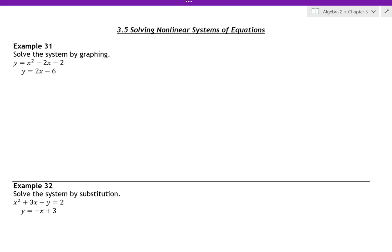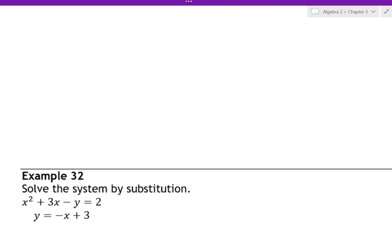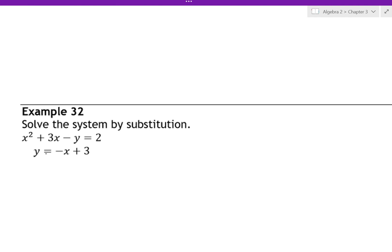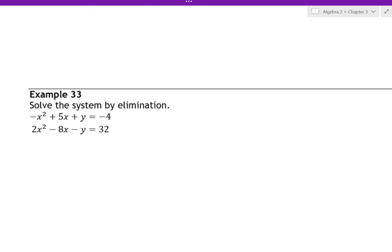We are looking at 3.5: solving nonlinear systems of equations. There are different ways to solve a system. One way is to graph it — we'd graph the two equations separately, so the top one would be a parabola and the bottom one would be a line, and we'd look for the point at which they cross. Another method is substitution, where you plug one y value into the other. Lastly, we have elimination, where you add the two equations to make a new one, and oftentimes one of the variables goes away.